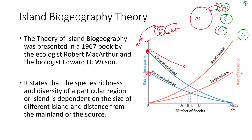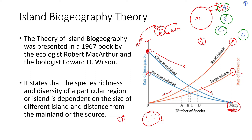As immigration decreases with increasing species richness, the rate of extinction comes into play. Smaller the island, higher the rate of extinction — when there are many species in a small island, the extinction rate is highest. Larger islands have a lower rate of extinction even with many species. The rate of extinction lowers when species numbers decrease due to emigration or death.